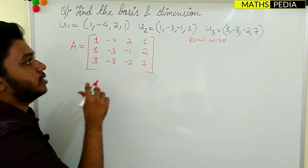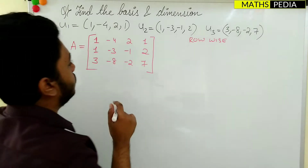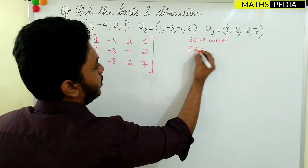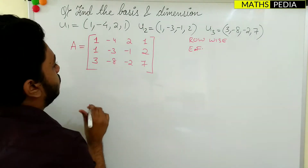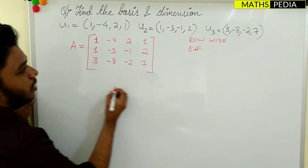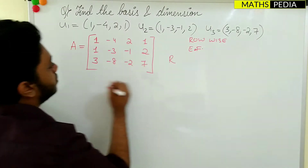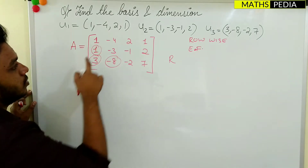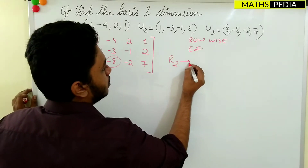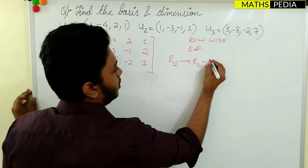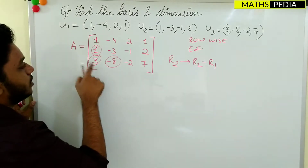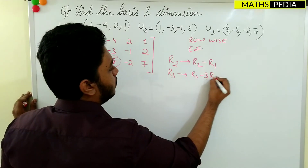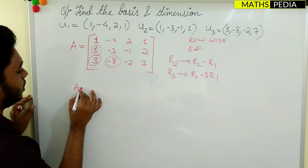After writing the vectors row-wise and forming the matrix, you need to reduce it into echelon form using row operations. To make the entries below the first pivot zero: R2 = R2 - R1, and R3 = R3 - 3R1.